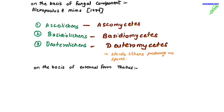Based on the external form of thallus — for students who don't know, thallus is an undifferentiated mass of cells where the plant body is not differentiated into root, stem and leaf. For example, in algae you cannot distinguish root, stem and leaves — so that is called the thallus.